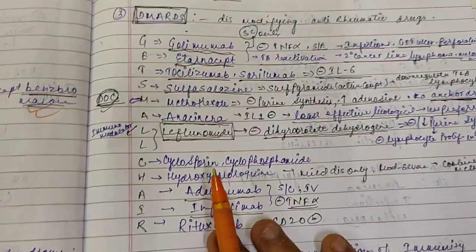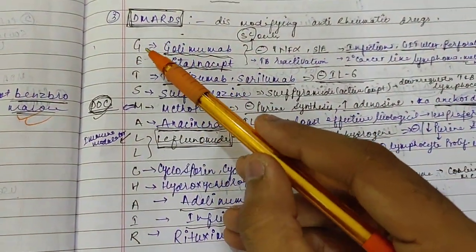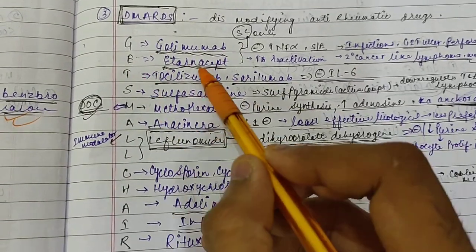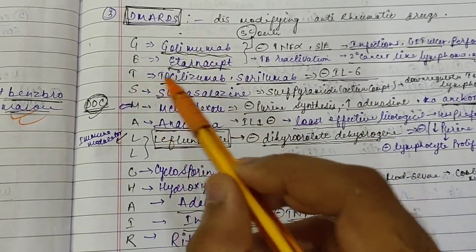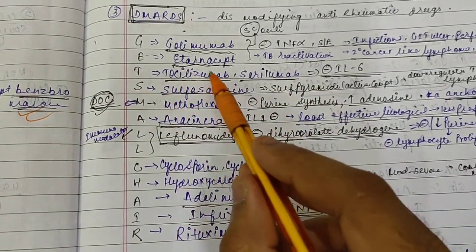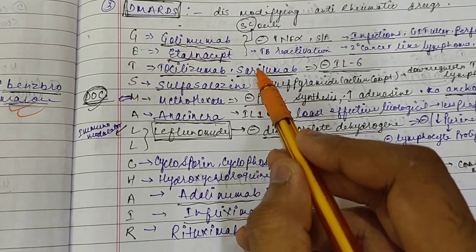So it includes a variety of drugs. You can remember like this: the first G for Golimumab, the second E for Eternasef, then T for Toclyzumab and Serilumab. T for Toclyzumab and along with it you must remember Serilumab.